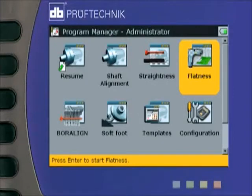Rotoline Ultra Flatness is an add-on module for the Ultra that lets you measure the flatness and levelness of a surface in three dimensions.